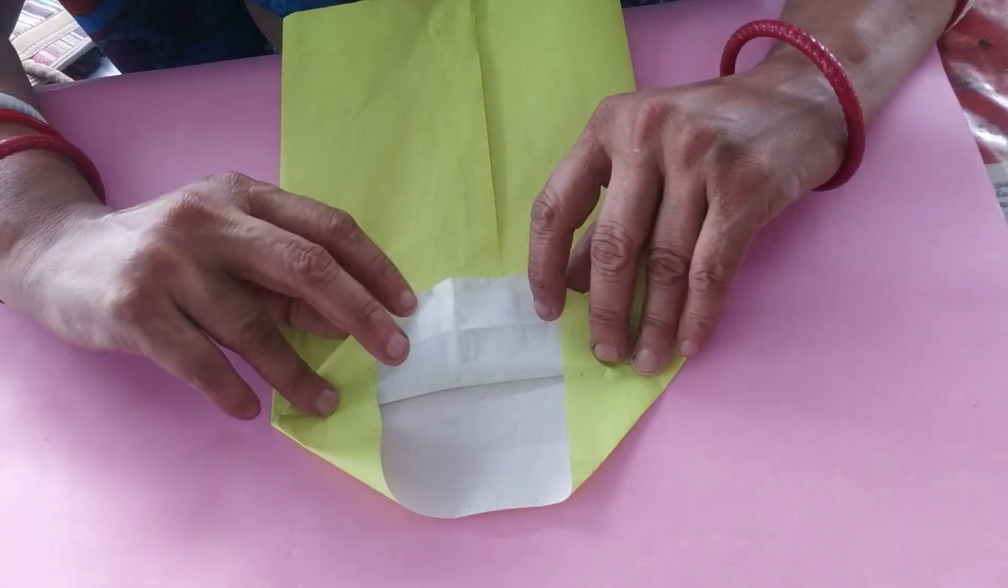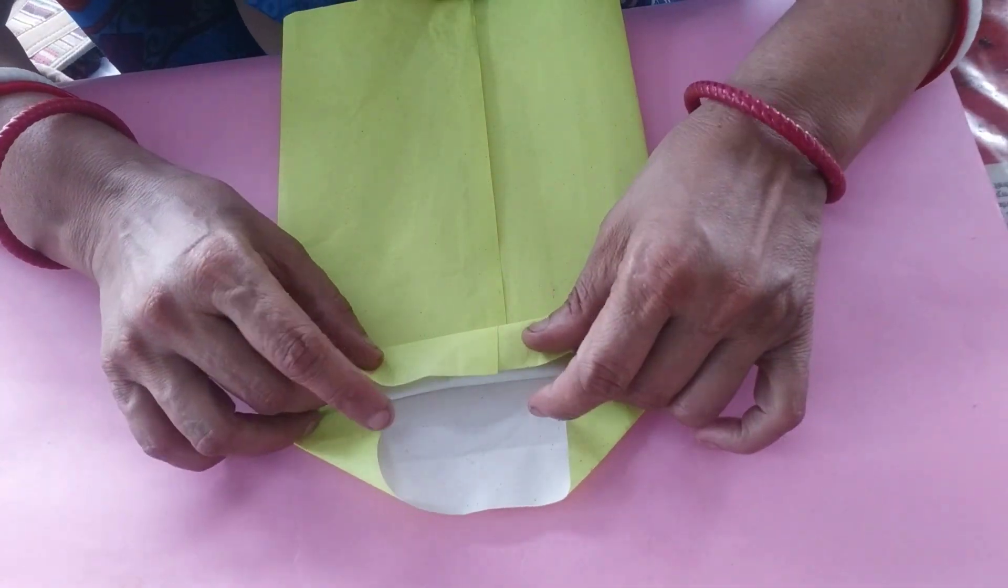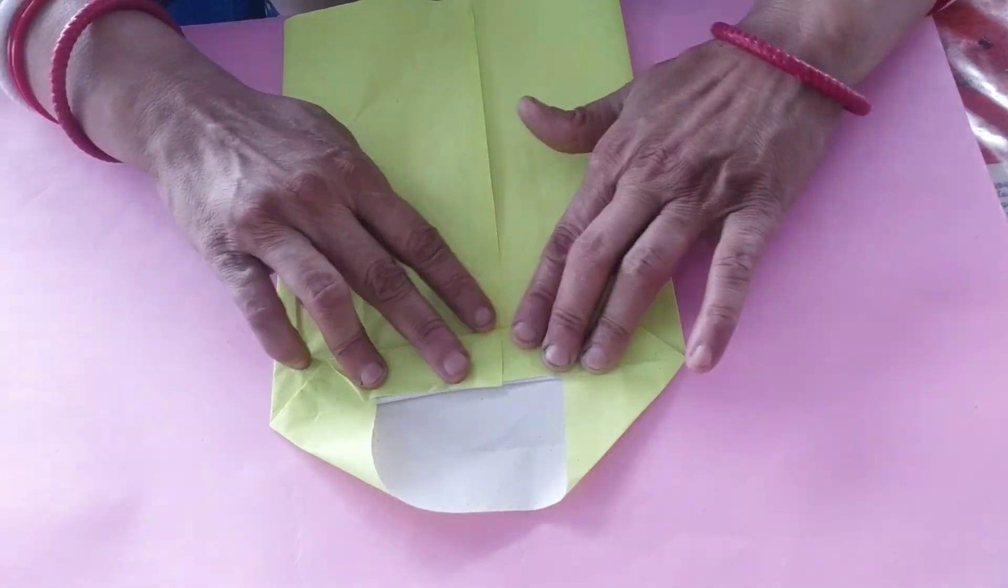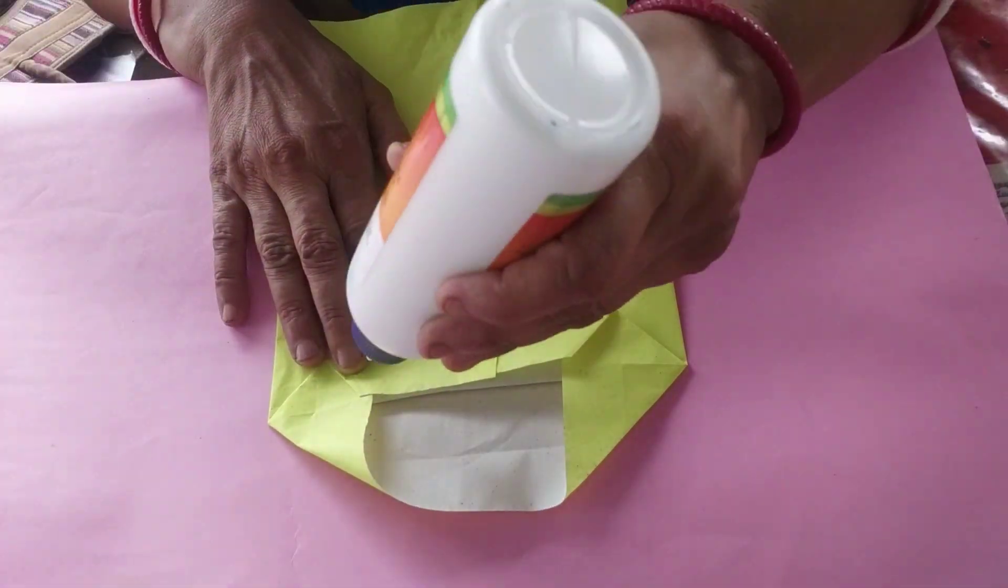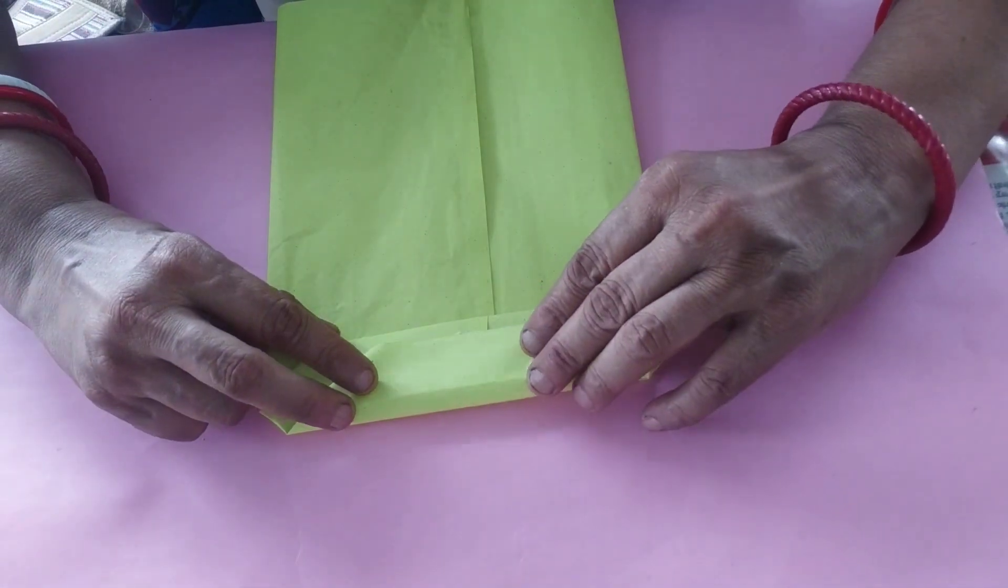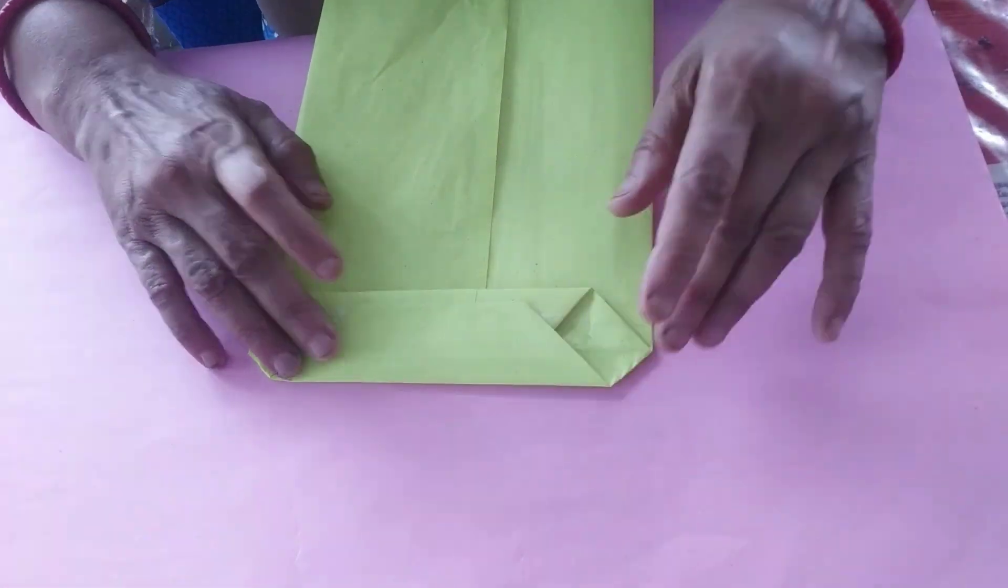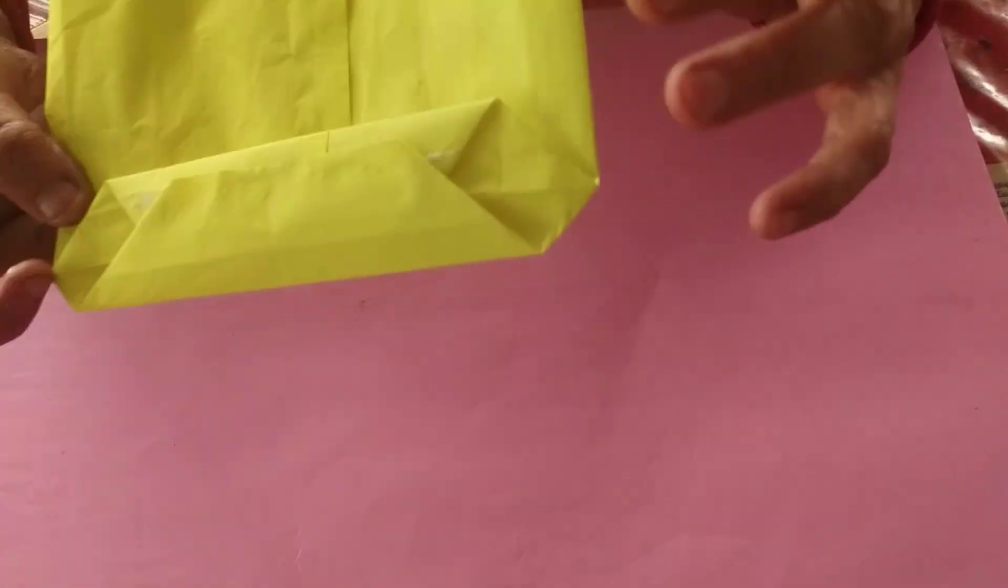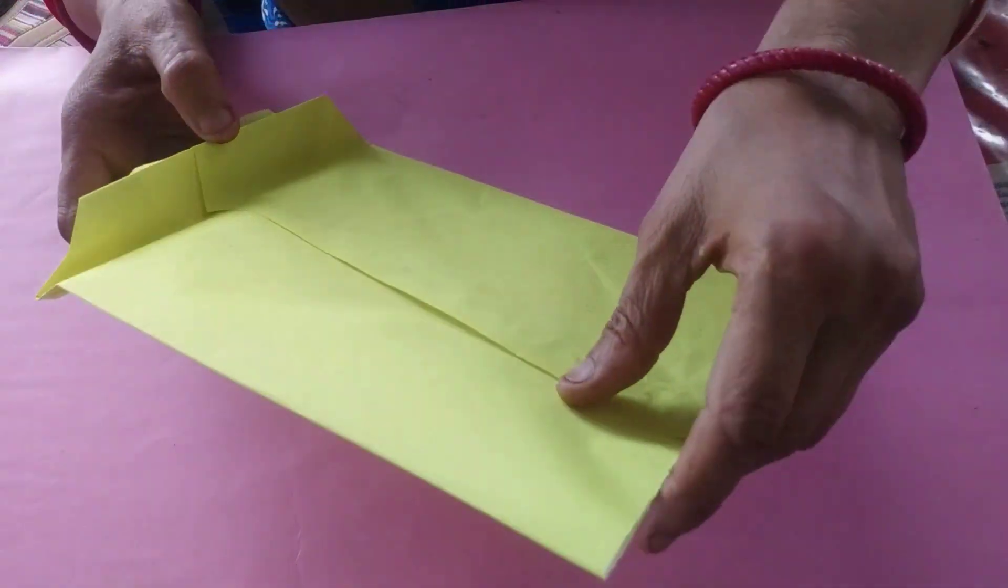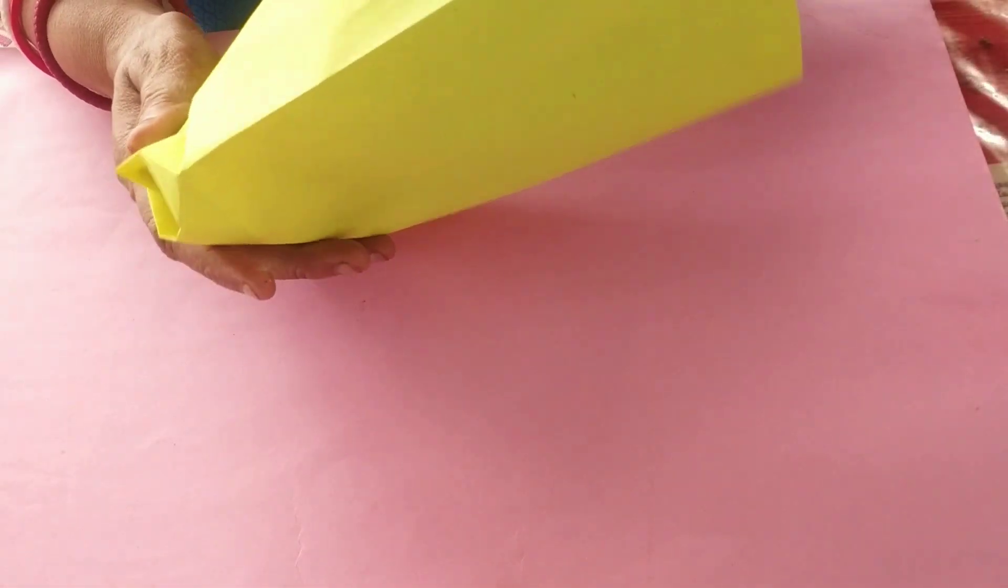Again, we fold half. We fold half and paste glue and cover it. You see this triangle, and your paper bag is ready.